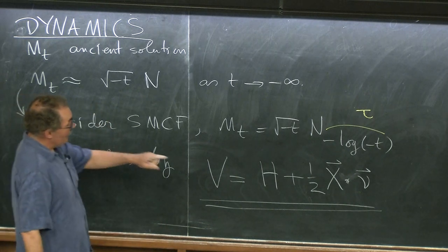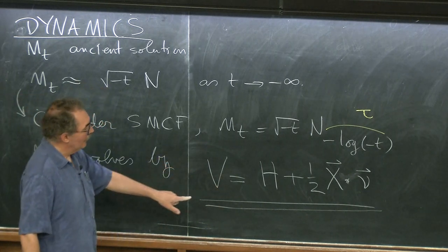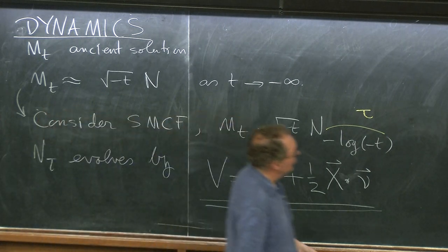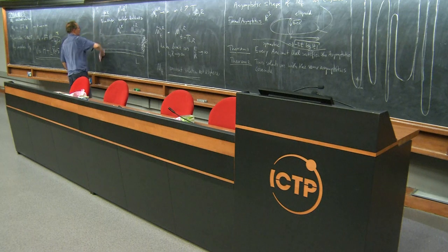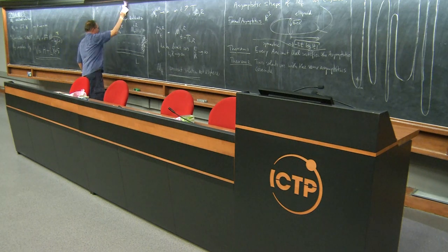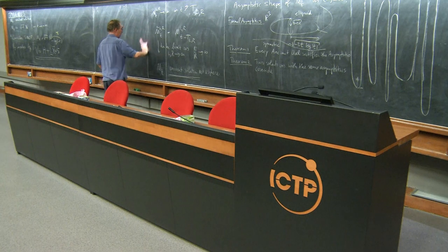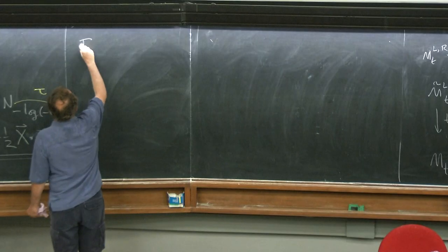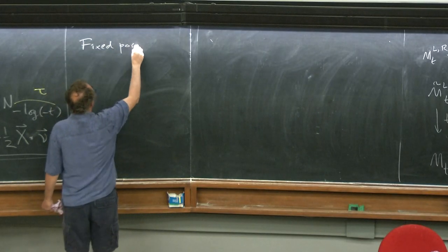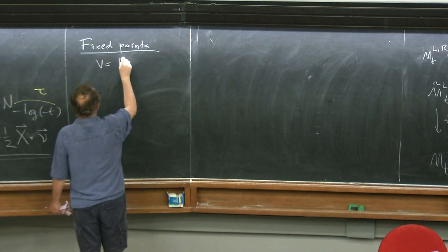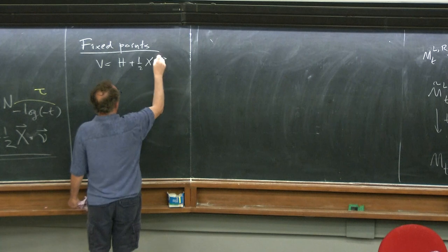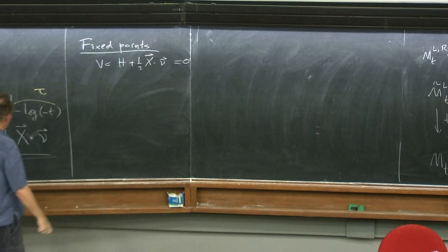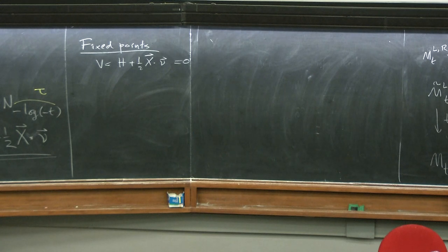Then N(τ) evolves by velocity equals mean curvature plus one-half of X(τ) dot ν, where X is the position vector and ν is the unit normal. This is the rescaled mean curvature flow. What I really want to look at is the dynamics for solutions to this equation.